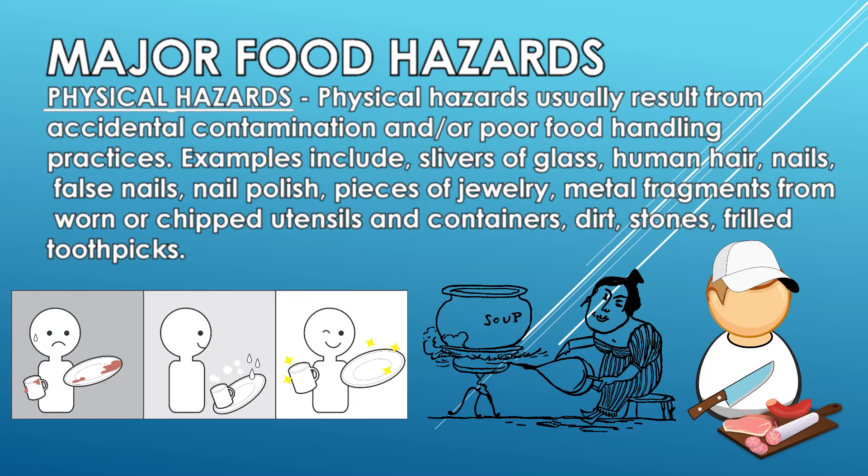Physical hazards usually result from accidental contamination and or poor food handling practices. Examples include slivers of glass, human hair, nails, false nails, nail polish, pieces of jewelry, metal fragments from worn or chipped utensils and containers, dirt, stones, and frilled toothpicks.